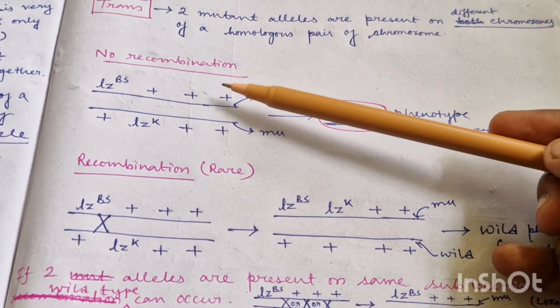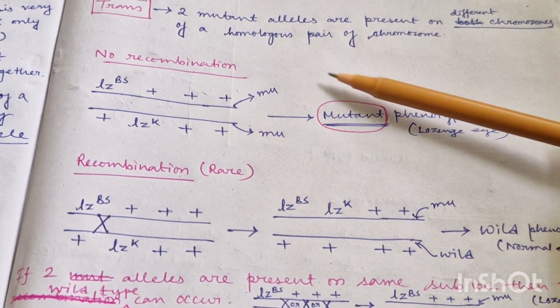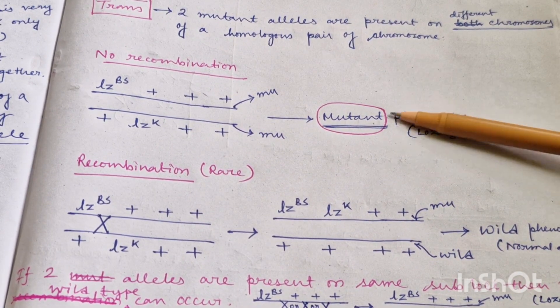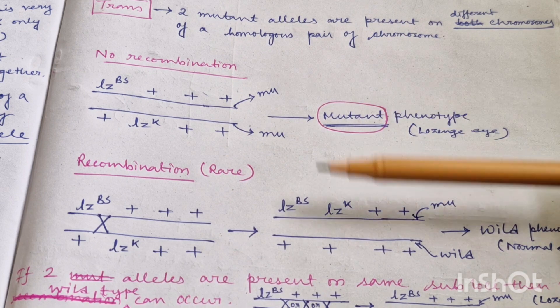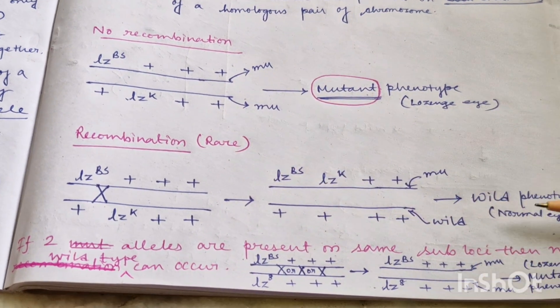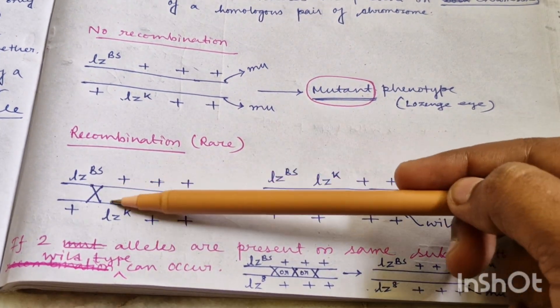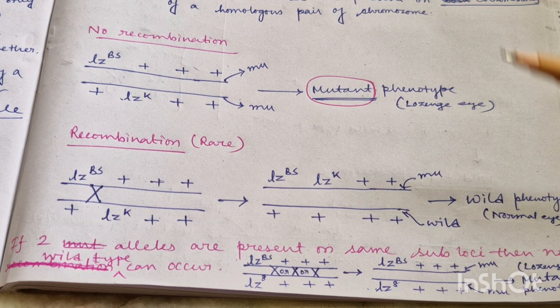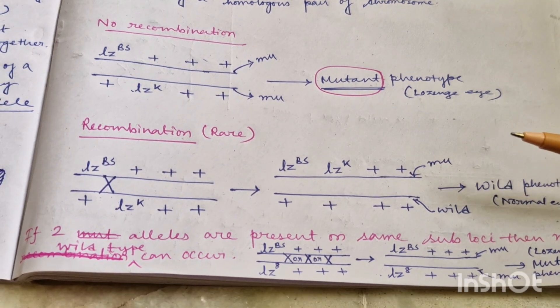In case of trans configuration, when no recombination is there, mutant phenotype will be shown — which is different from cis configuration. And in case of recombination between the two mutant alleles, wild type phenotype will be shown — which is also different from cis configuration.